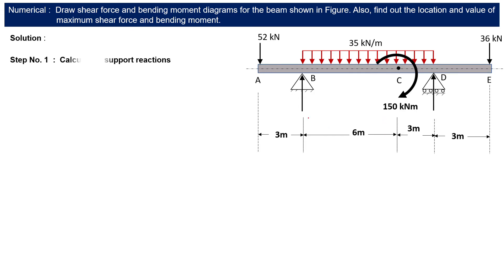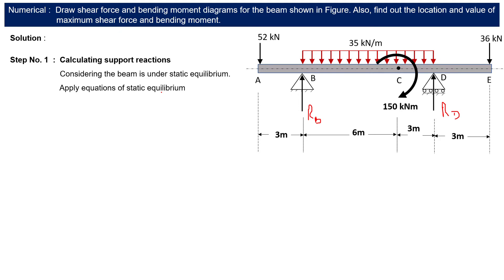First of all we have to calculate the support reactions: RB at support B and RD at support D. To solve this problem, we consider the beam under static equilibrium so we can apply the equations of static equilibrium — summation of Fy equal to 0, and summation of moments about any simple support equal to 0.